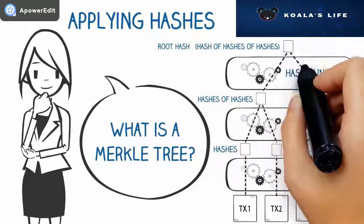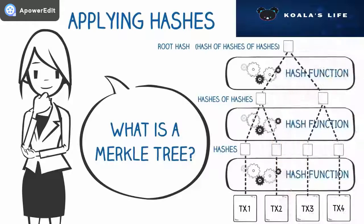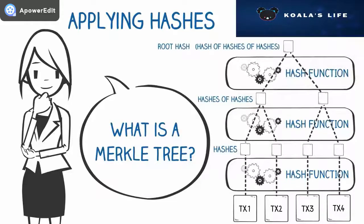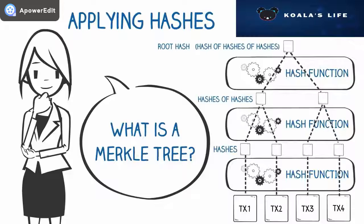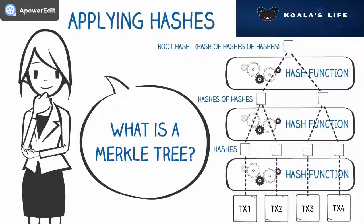The Merkle tree allows for the detection of any changes to any data within the transactions of a block, by simply re-running through the process for each transaction and comparing the results to the original root hash.